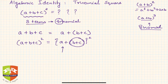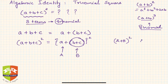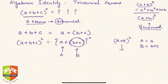If we club these two together and treat (a + b) as capital A and c as capital B, then the identity becomes A² + 2AB + B², where A = (a + b) and B = c. We know this expansion, and it's written over here.